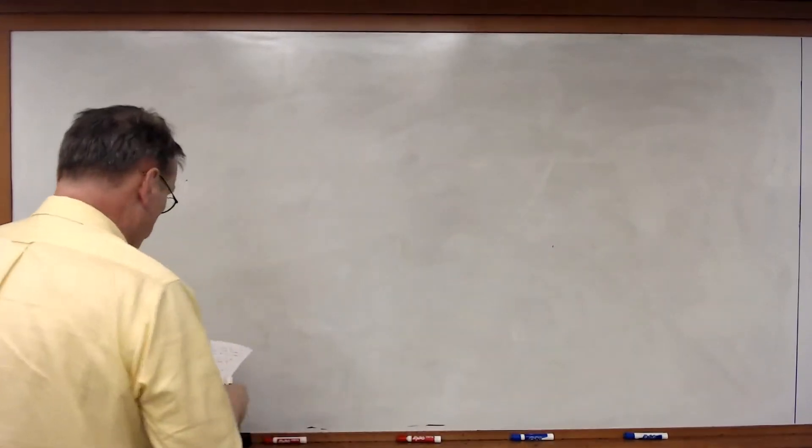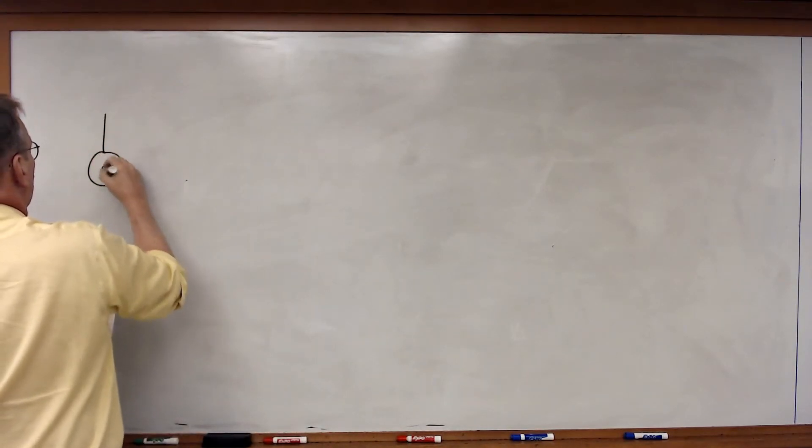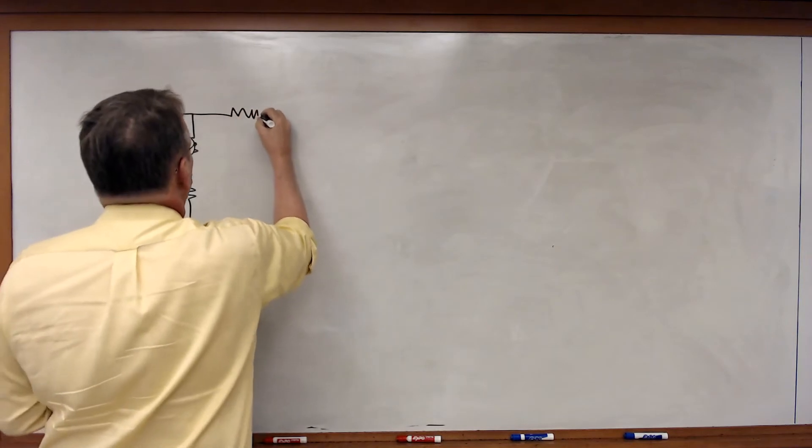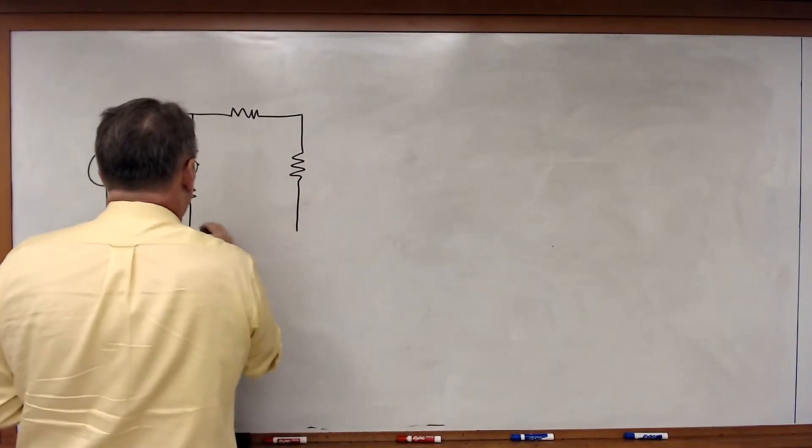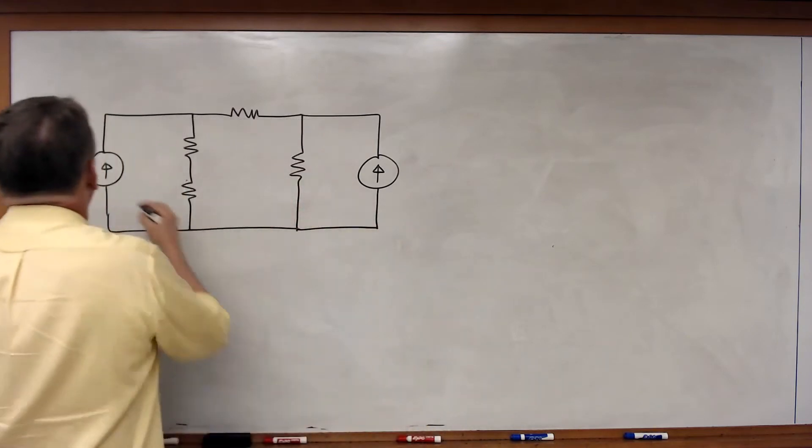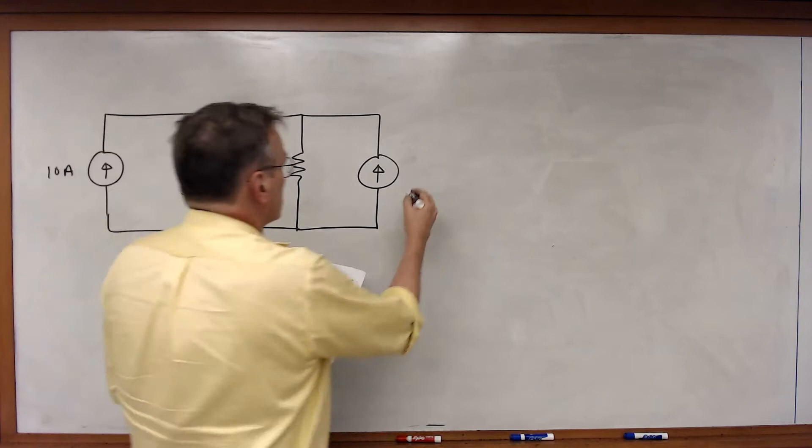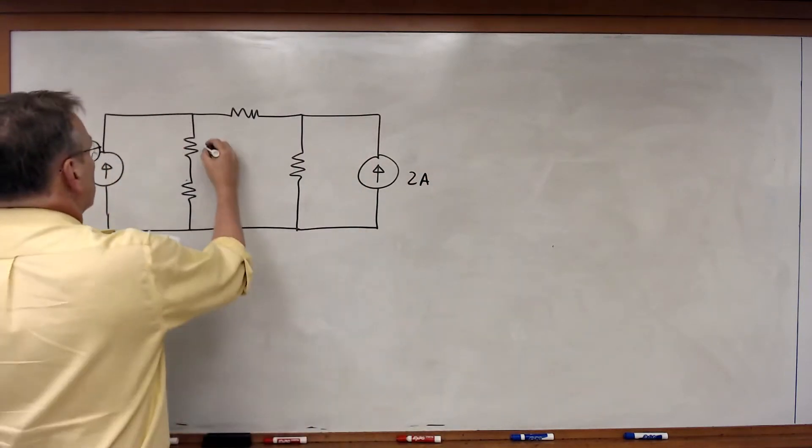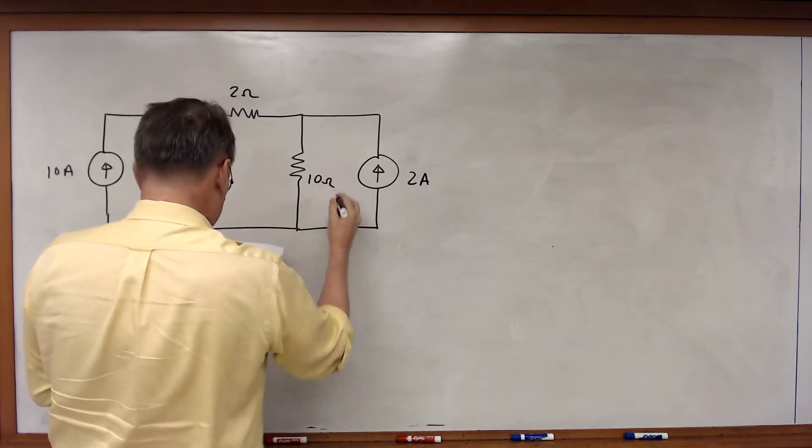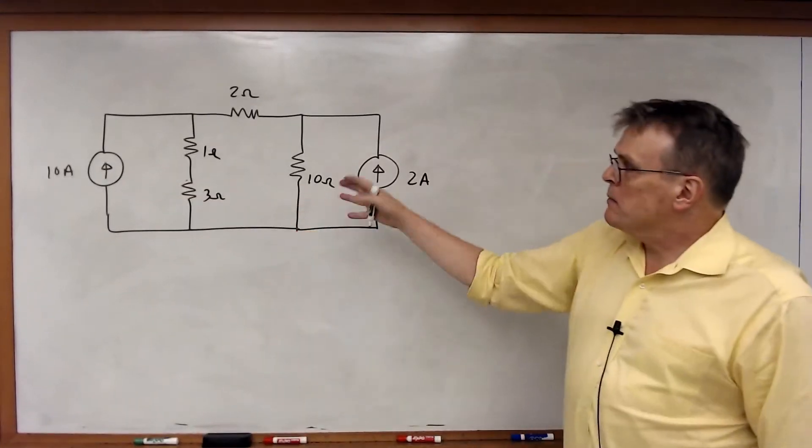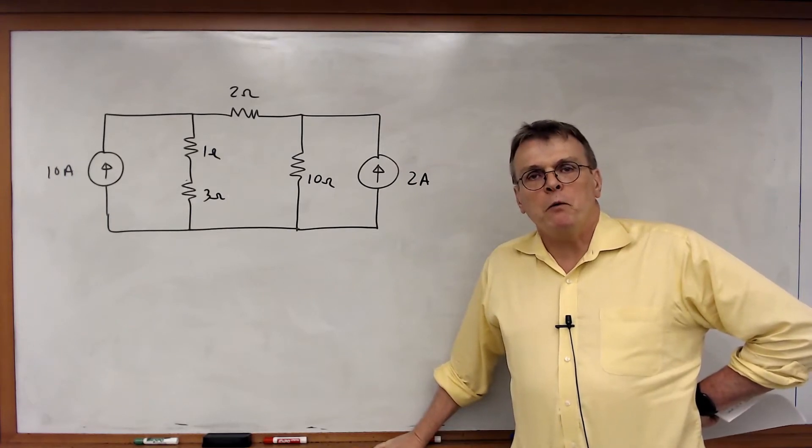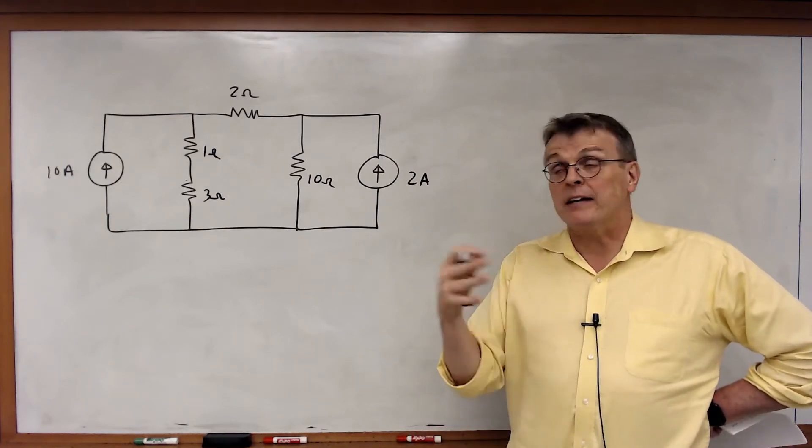So let's start with a problem. Here I've got a circuit composed of two current sources, 10 amp and 2 amps, and then a group of resistors: 1 ohm, 3 ohms, 2 ohms, and 10 ohms. What I want to do is solve for all the voltages and currents in this circuit. Now I could do this by brute force if I wanted to, but we're going to start off with nodal analysis to see how easily and elegantly we can solve a circuit like this.